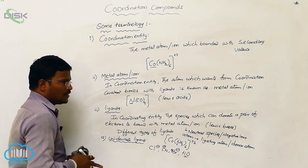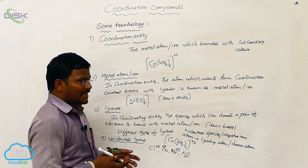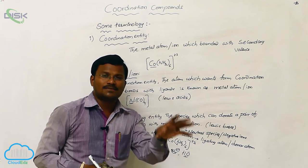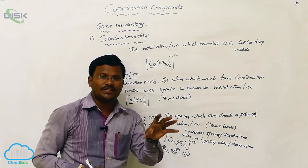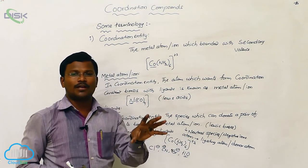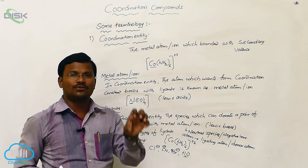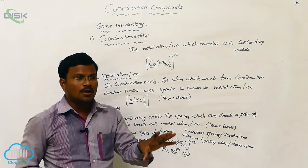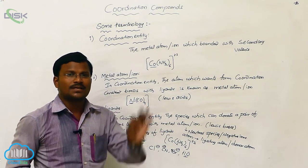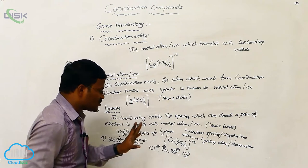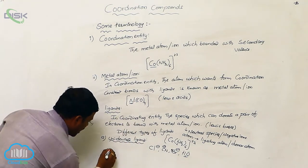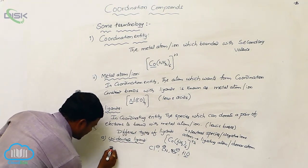Sometimes, in a single ligand, more than one atom is present which can readily donate non-bonding pair of electrons simultaneously to form coordination covalent bond with the same metal atom. Such ligands are called polydentate ligands.